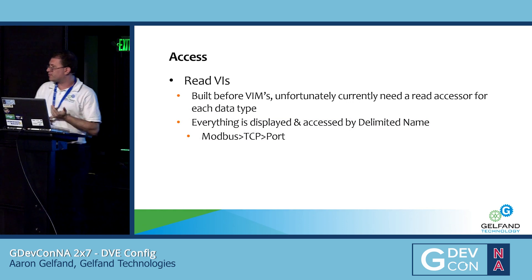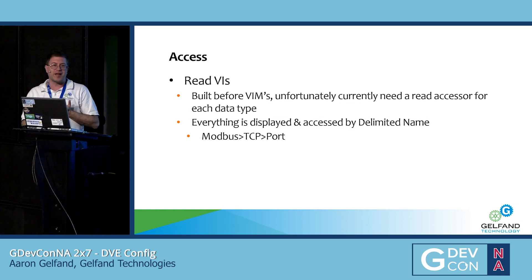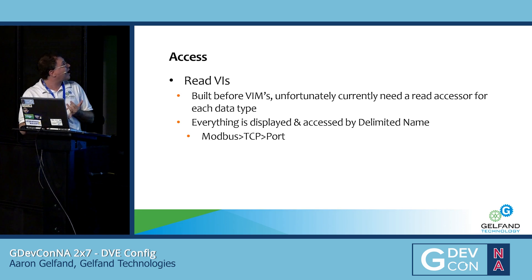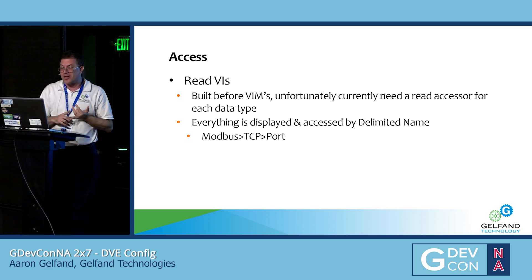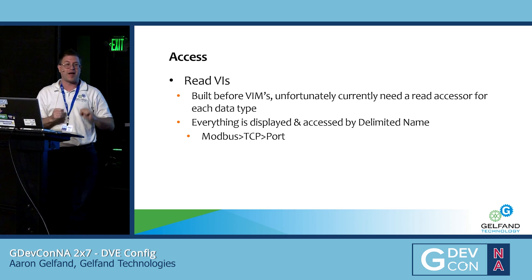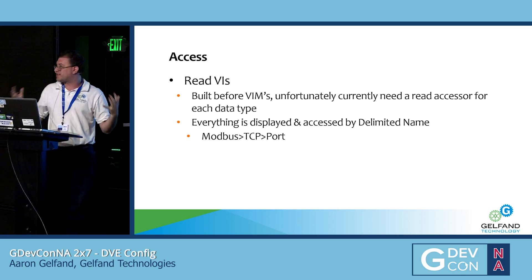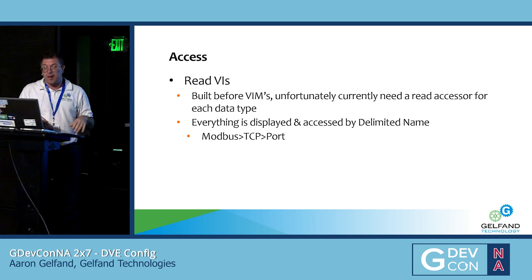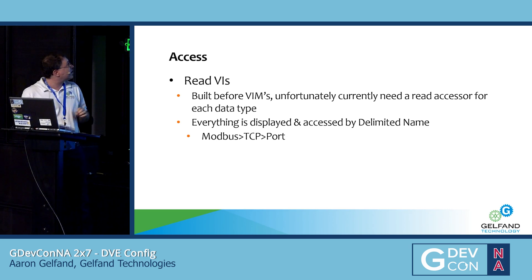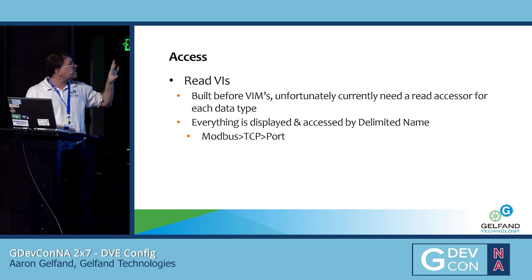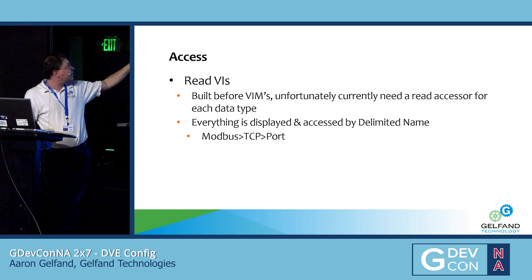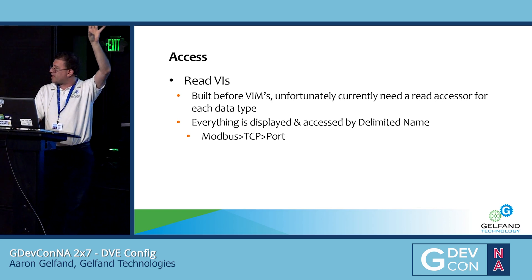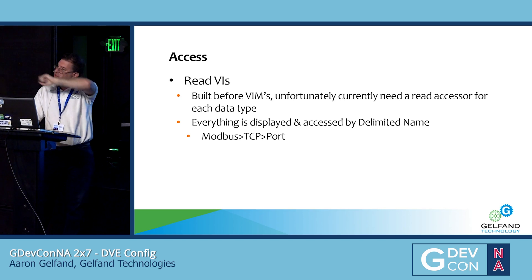Accessing is done through read VIs. This was done before VIMs were fairly widespread, and I do want to rebuild this library because right now I have to create a read accessor for every single data type — that's a little bit of a pain. But everything is accessed by the delimited name. For example, I might have in my tree: Modbus, TCP, and then port under that, with each level delimited.